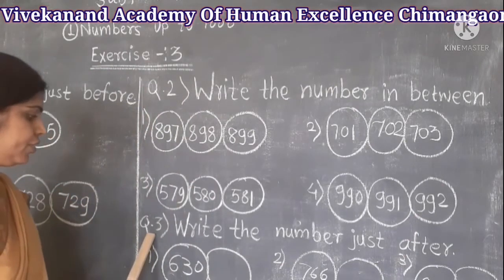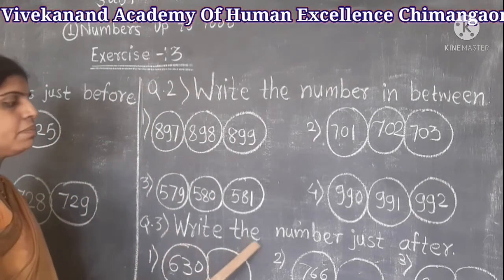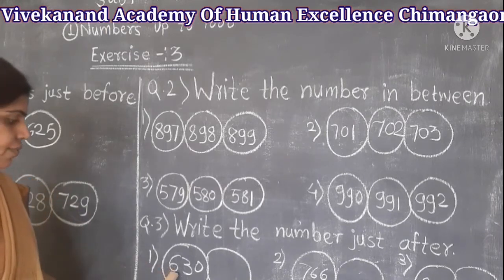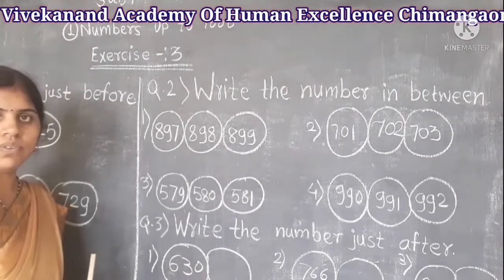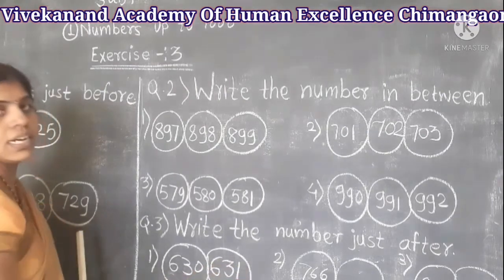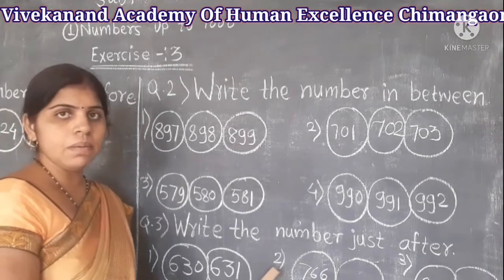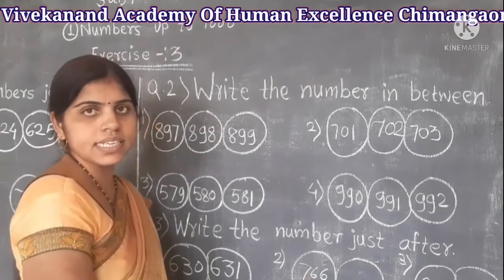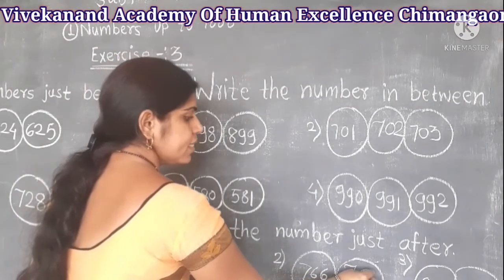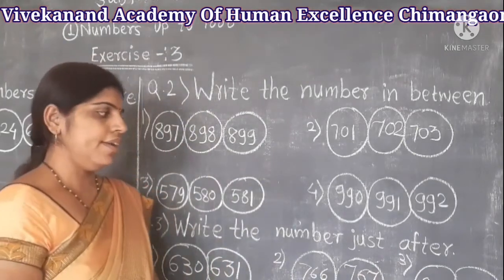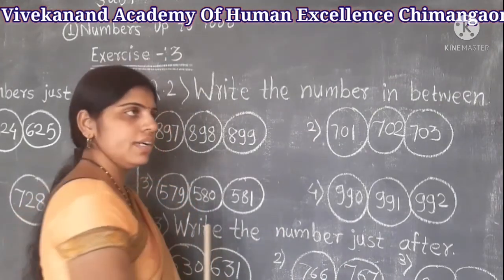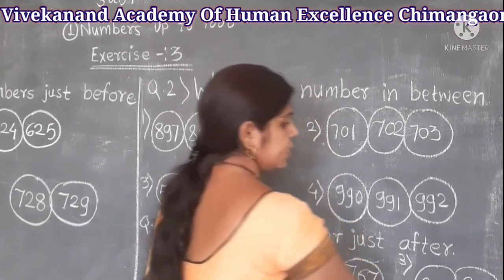Question 3: write the number just after. The first number given is 630, so after 630 comes 631. Second example: we have 766, so after 766 there is 767. Last example: 951, so after 951 comes 952.